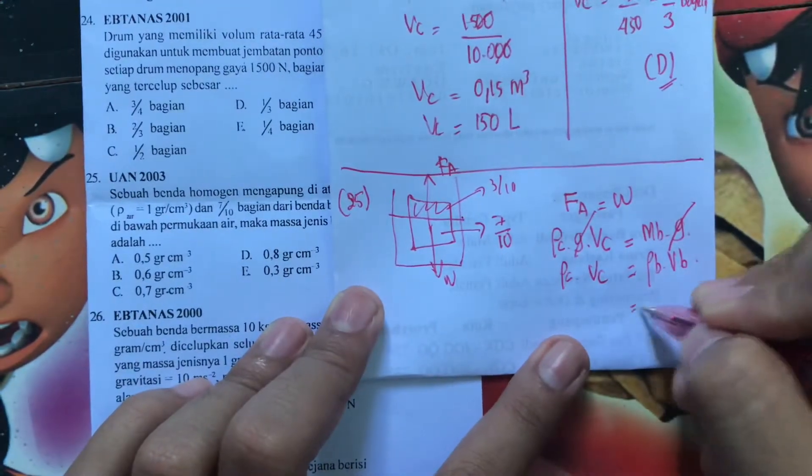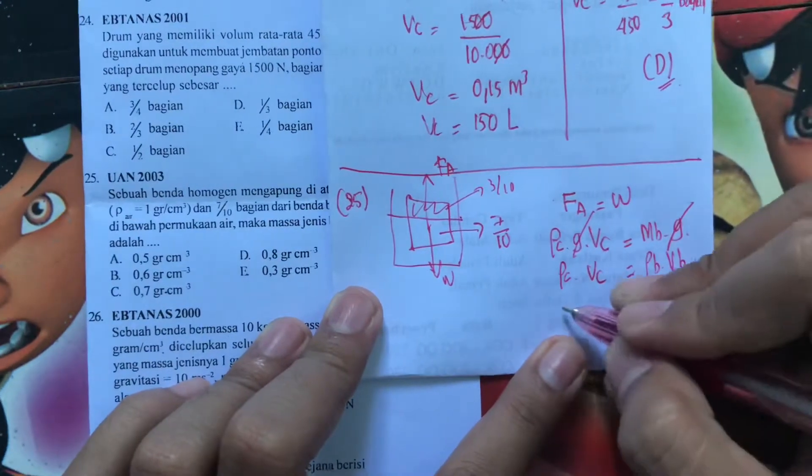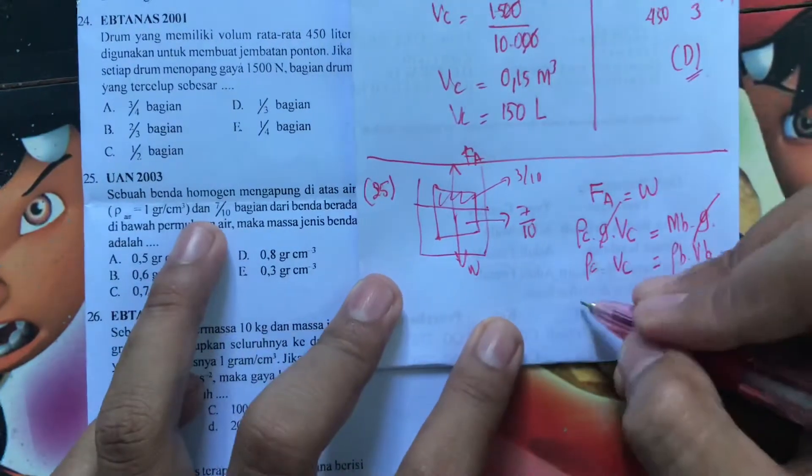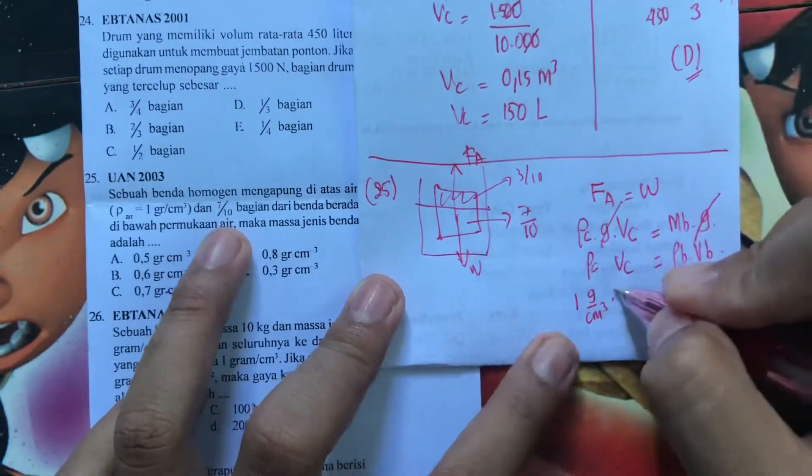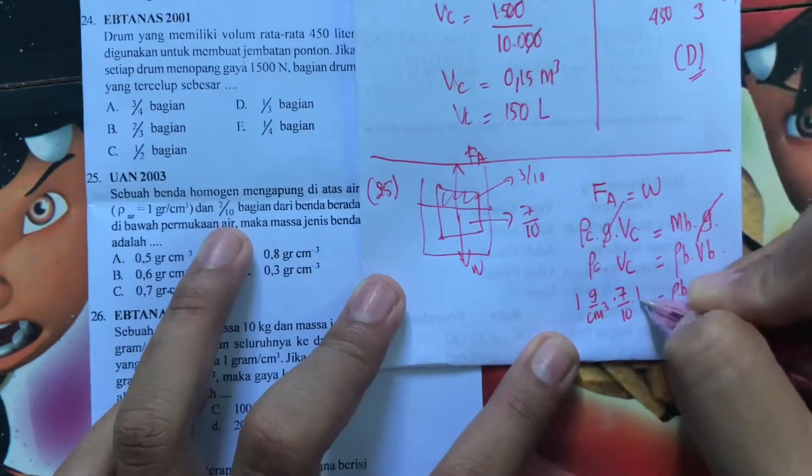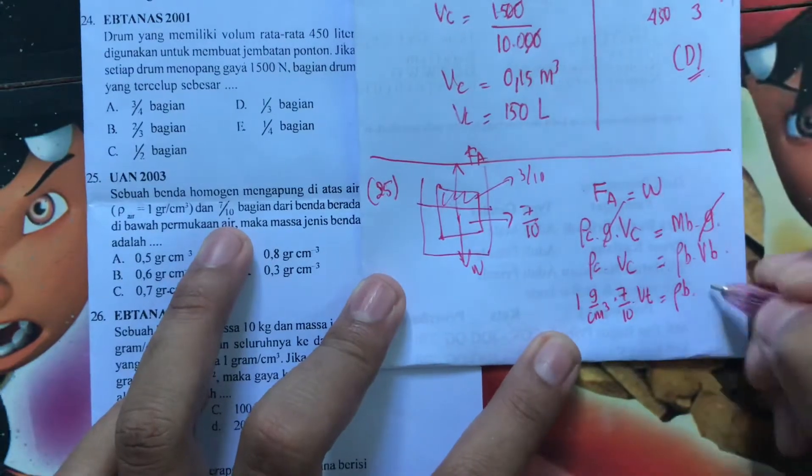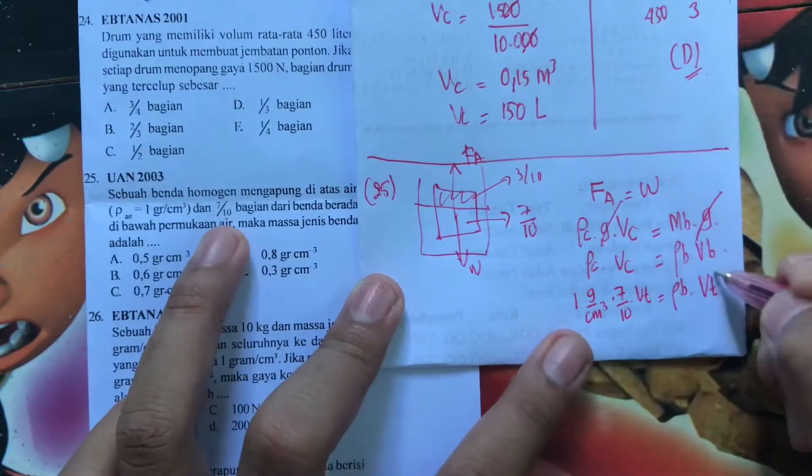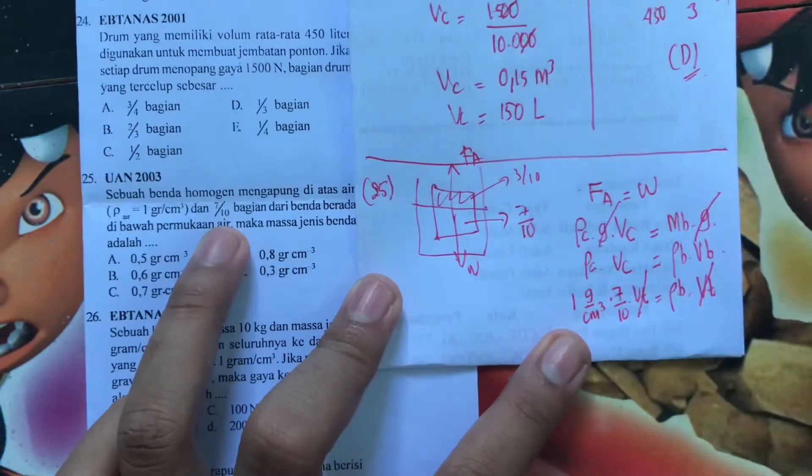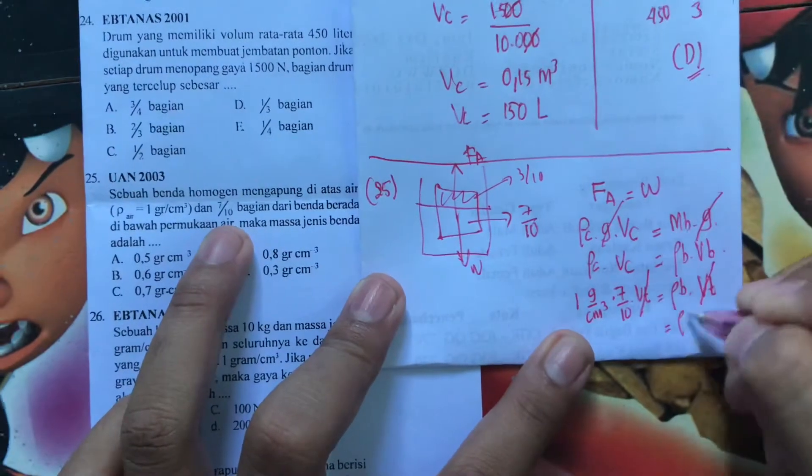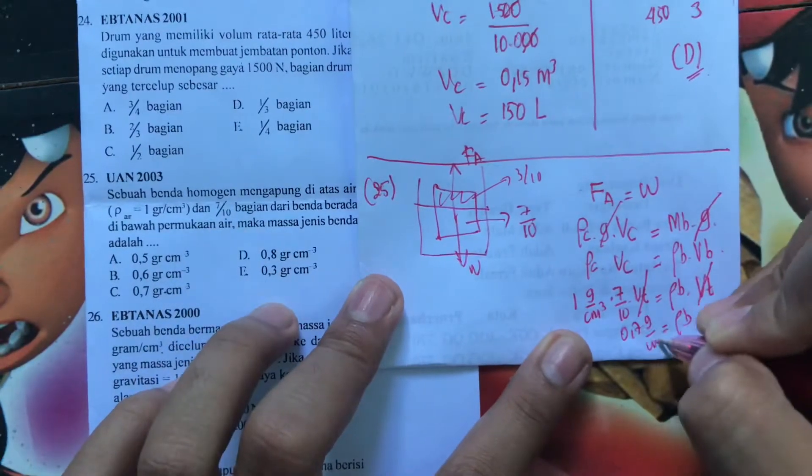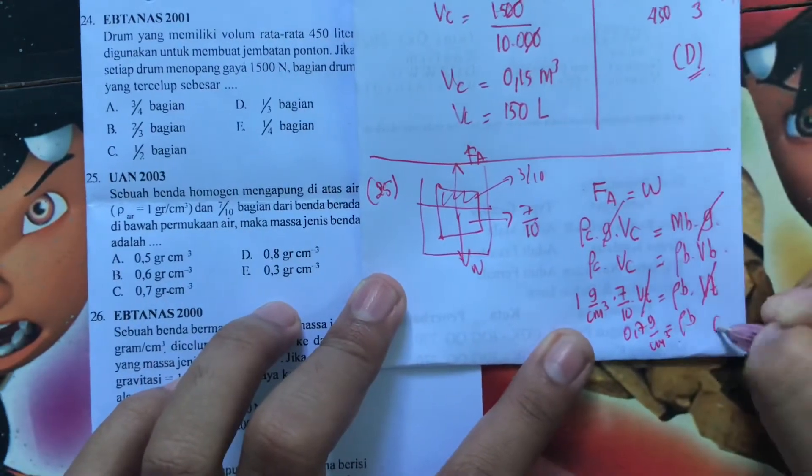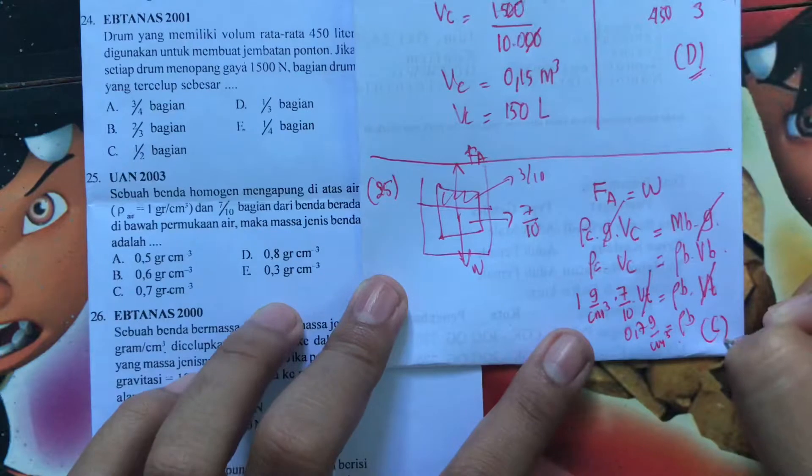Karena ditanyain rho benda berarti rho benda itu adalah rho cairannya berapa? Di sini air berarti 1 gram per sentimeter kubik. Volume tercelup berapa? 7 per 10 dari volume total benda. Berarti ini volume benda ya tetap volume total aja. Berarti kita coret nih volume total. Berarti rho bendanya adalah 0,7 gram per sentimeter kubik. Berarti jawabannya adalah C.